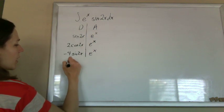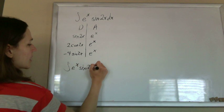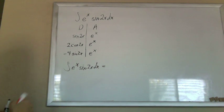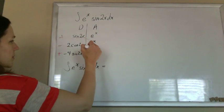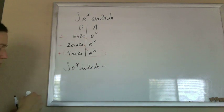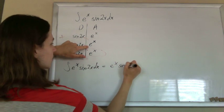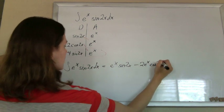And so what we've got is our original function that we're trying to find is supposed to equal, remember, it's plus or minus or plus, so that times that, that times that. So it's e to the x sine 2x minus 2e to the x cosine 2x minus 4 times the integral of e to the x sine 2x dx.